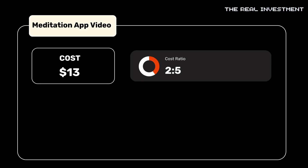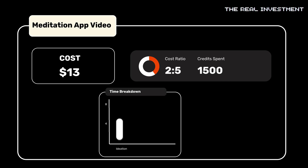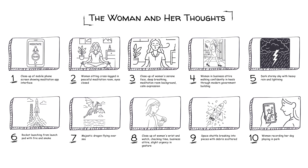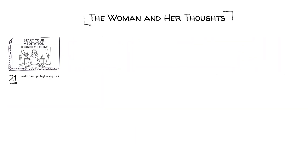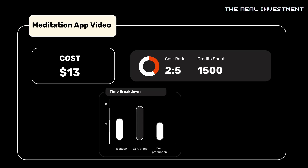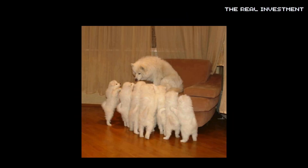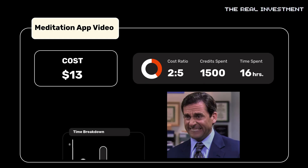This cost me $13 and 1,500 credits total, including all the failed attempts. I also spent five hours building the concept, breaking this one-minute story into 21 specific scenes — from a woman in meditation through her wandering thoughts back to peace. Then seven hours writing prompts and generating videos, plus another four hours editing and cleaning up mistakes. That's 16 hours total for someone with experience in prompting, video editing, and storytelling. So it's not just money — it's time, patience, and technical skills.